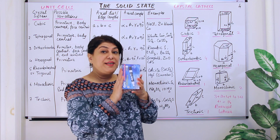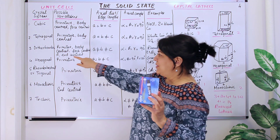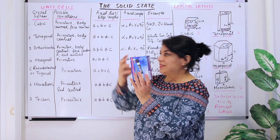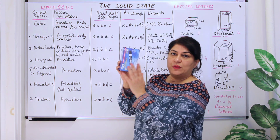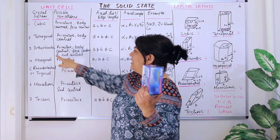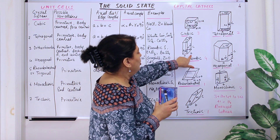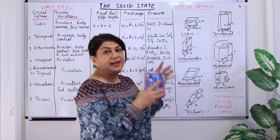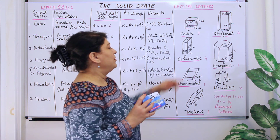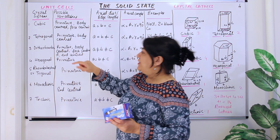The third kind of unit cell is the orthorhombic. An orthorhombic system is like a cuboid, but here a is not equal to b is not equal to c — all three sides have different lengths. However, alpha, beta, and gamma are all 90 degrees, so it is a true orthorhombic shape with right angles.